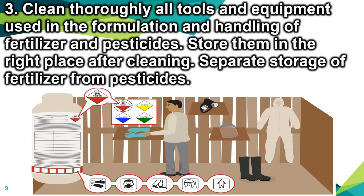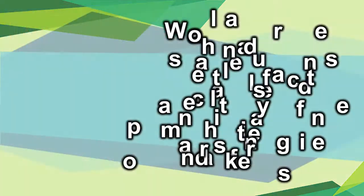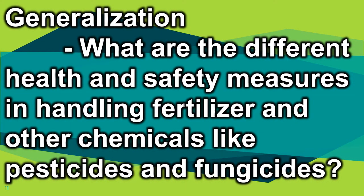Step three: clean thoroughly all tools and equipment used in the formulation and handling of fertilizer and pesticides. Store them in the right place after cleaning, with separate storage for fertilizer and pesticides. Step four: the workplace should always be kept clean and safe to maintain the hygiene and safety of workers.